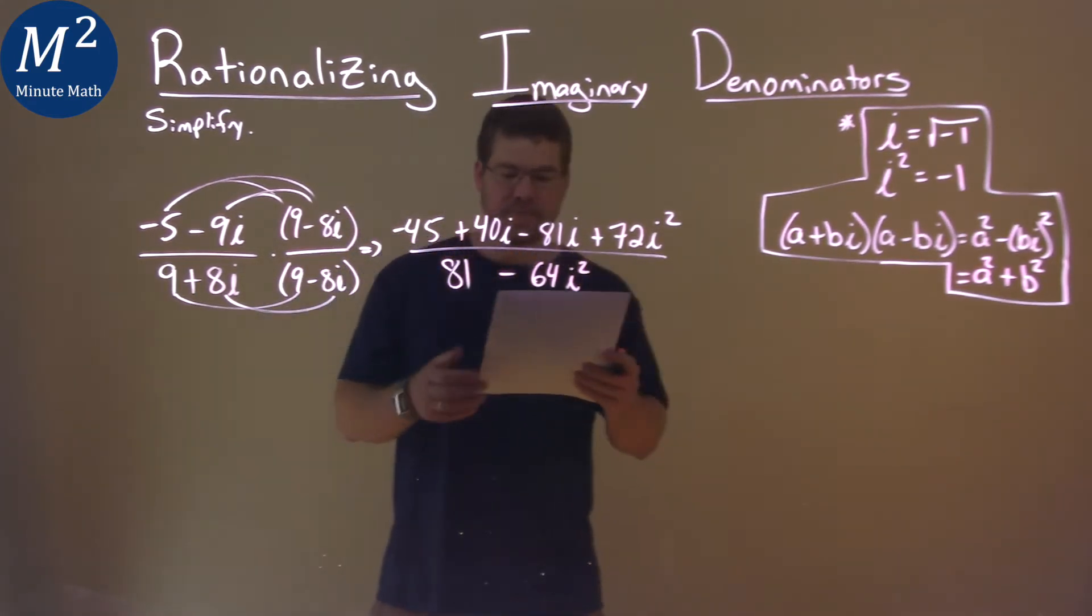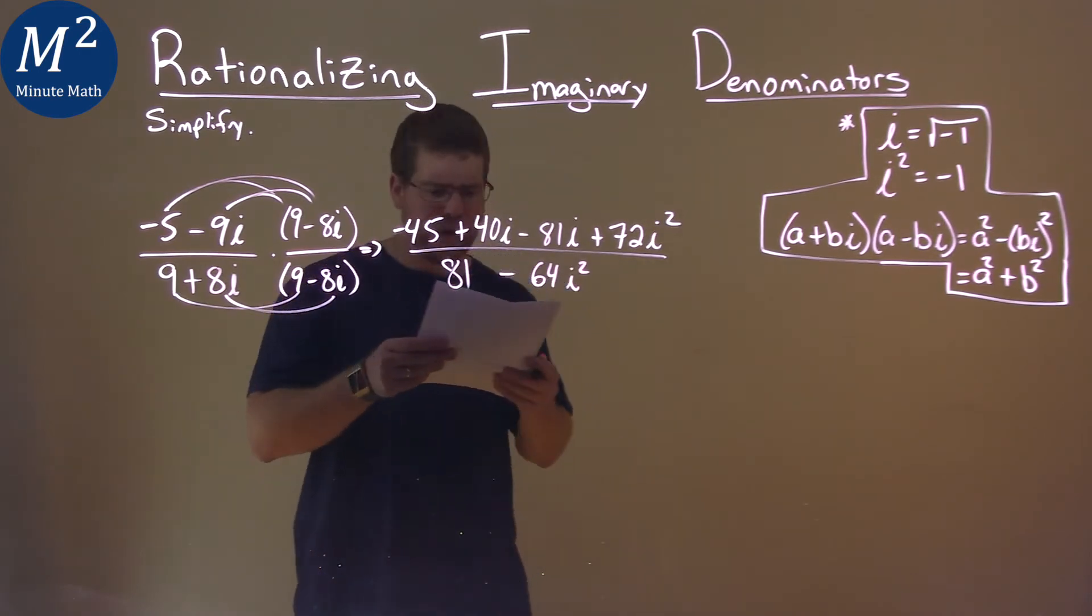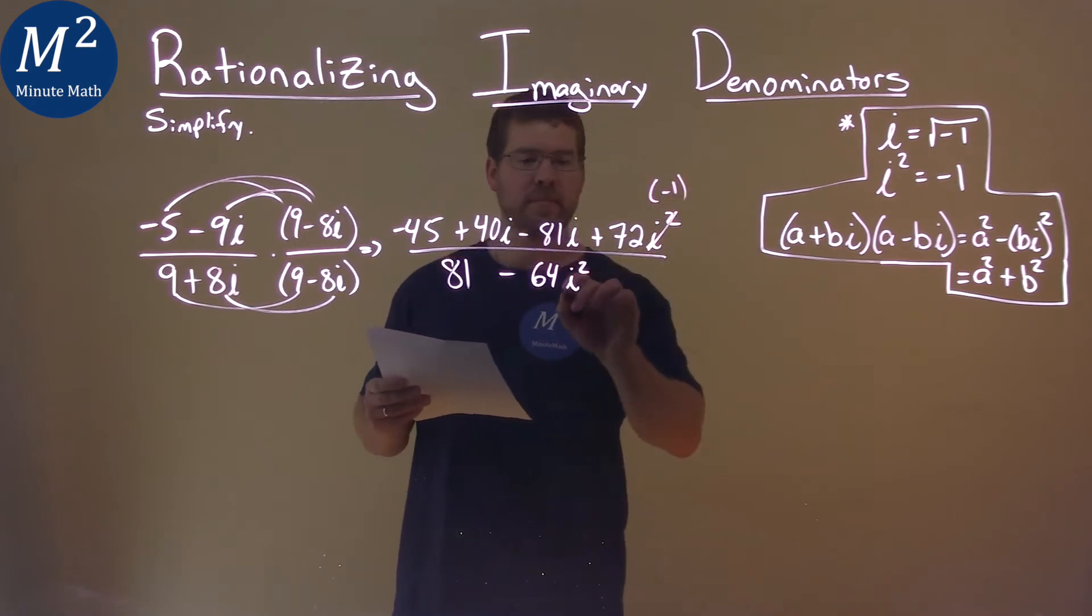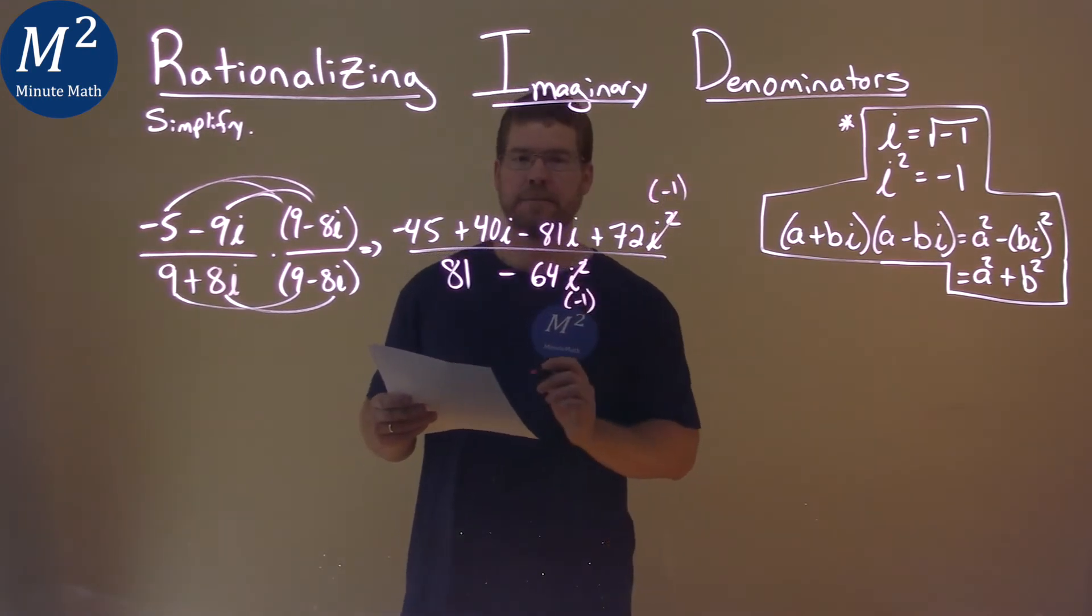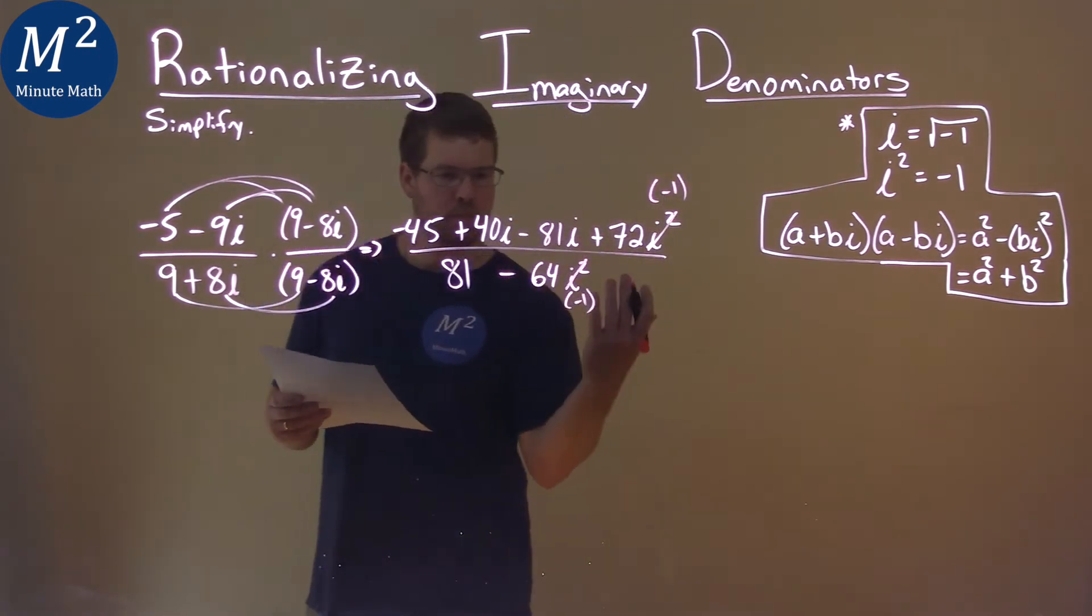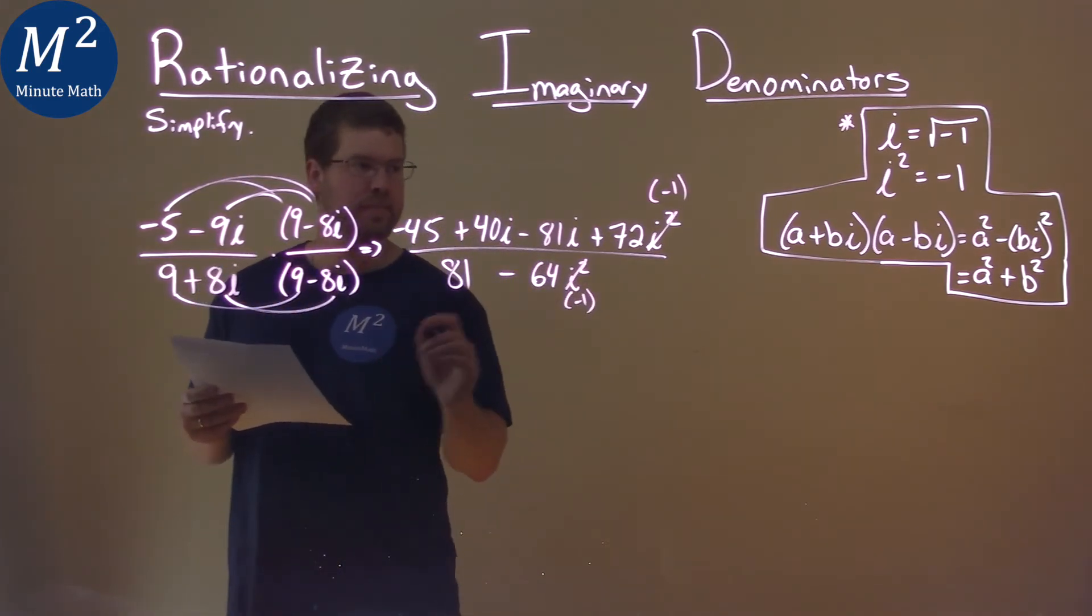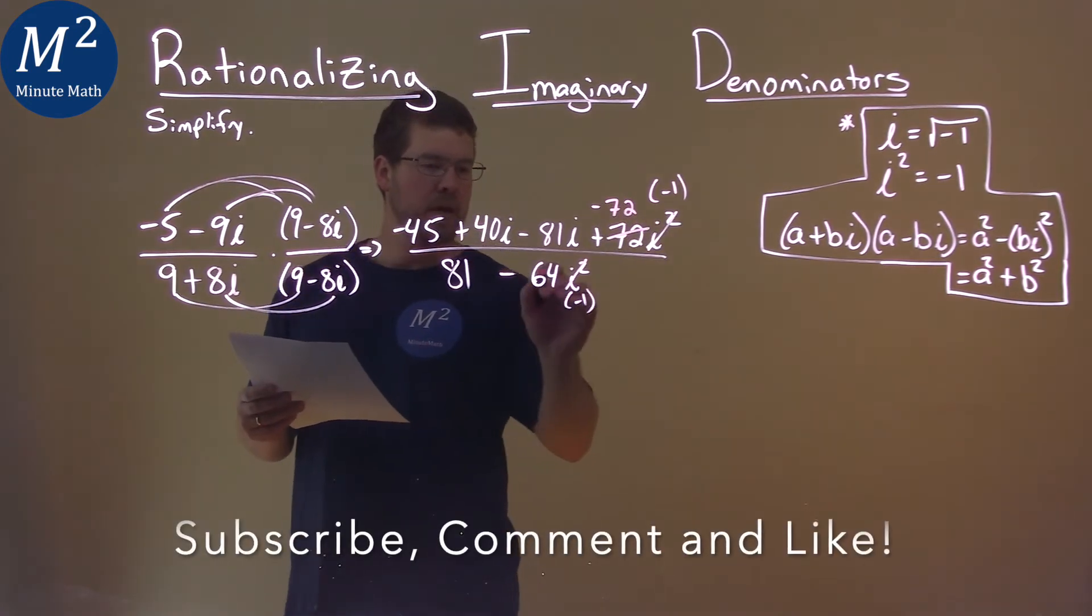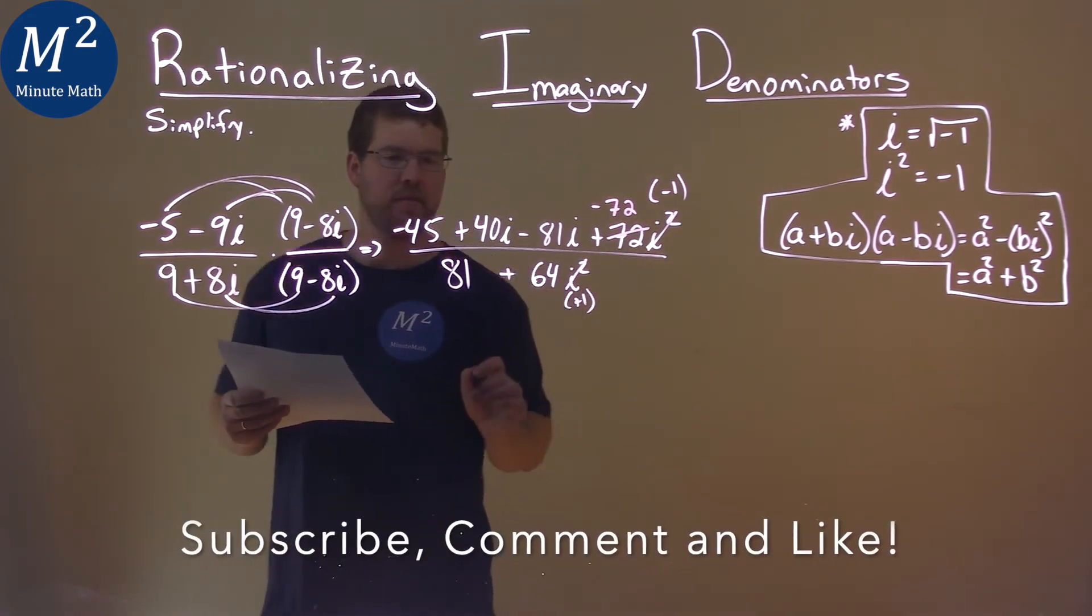Now we've got to keep simplifying this. What do we know about i squared? i squared equals negative 1, right here. So, simplify what we can. If it's negative 1, then this whole thing becomes negative 72, right? Negative 64 times negative 1 is positive 64.